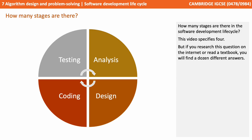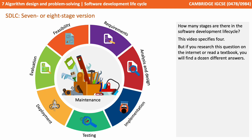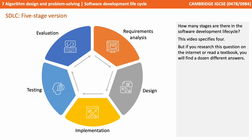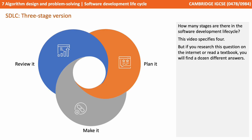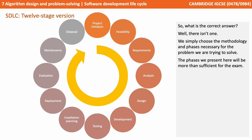How many stages are there in the software development lifecycle? Well, our video will tell you the answer is four. But if you research this question on the internet or read textbooks, you'll find a dozen different answers. Here is an example of a seven or eight stage version, here's one showing five stages, here's an incredibly simplistic version with just three — plan it, make it, review it — and here's quite a complex version with 12 stages. So, what's the correct answer? Well, there isn't one. You simply choose the phases that are necessary and a development methodology appropriate for the problem you're trying to solve. The phases we present here will be more than sufficient for use in your exam.